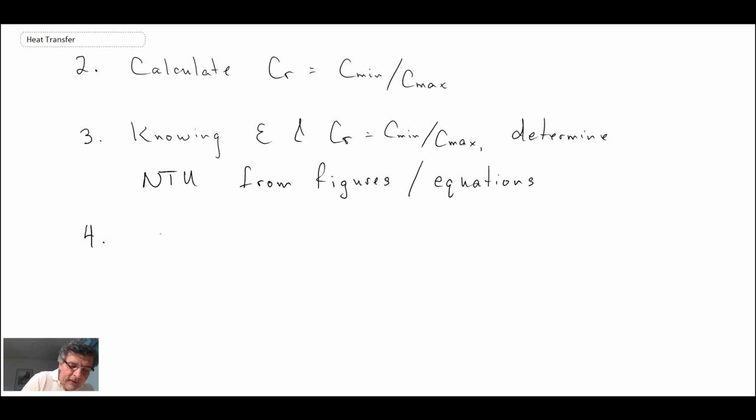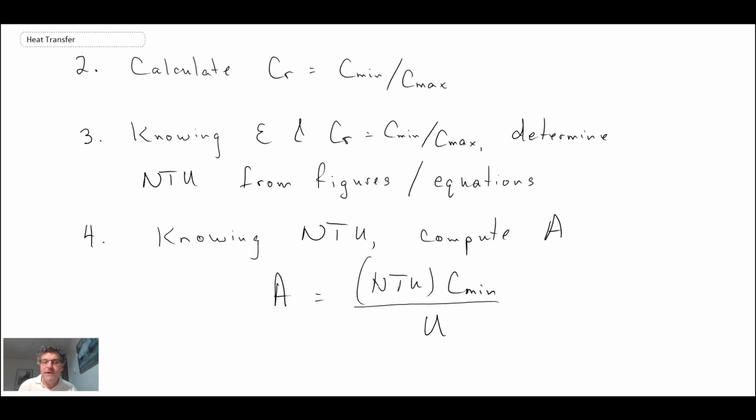And then finally, we're looking for the size. So knowing the number of transfer units, we can then get the area of the exchanger, which equals NTU times Cmin divided by the overall heat transfer coefficient U. So those are two different methodologies or procedures that you can use to apply effectiveness-NTU.